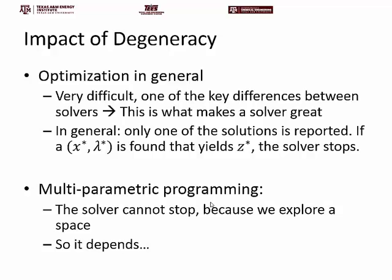However, in this tutorial we're talking about multiparametric programming. If you're not familiar with it, I suggest you look at the other videos on this channel which explain it in more detail. The point is much more difficult in the multiparametric case because we're not just looking for a single point — we're looking to explore a space and find functions. You can understand that if you have degeneracy, it's much more complicated because you can't just say 'I found a point, I'm good.' You have to explore the degeneracy.